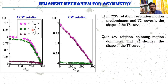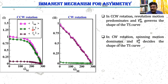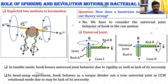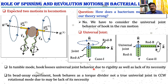If the hook bends, two motions — revolution and spin — arise and compete with each other. But when you restrict the hook bending, only one motion is possible: spinning motion. In bacterial locomotion in tumble mode, only spinning motion is observed — no revolution-type motion. The hook also does not act as a universal joint in tumble mode; it becomes rigid. So if you apply force to restrict the bending of the hook, then only spinning motion of the hook occurs.